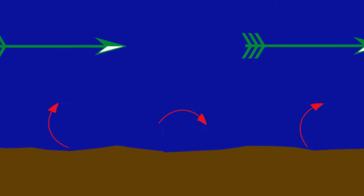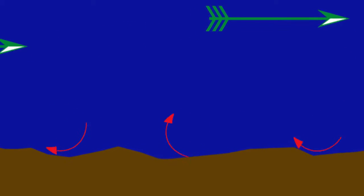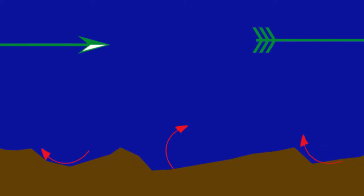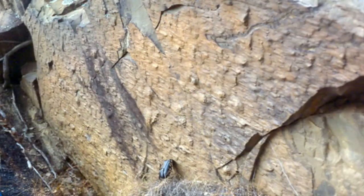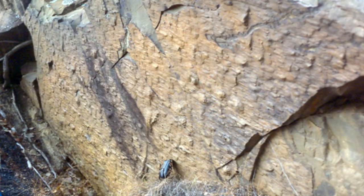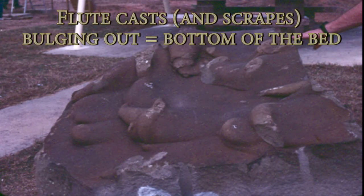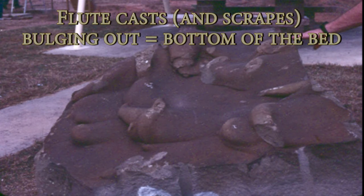The same is true of flute casts, which form from violent flow over fine-grained sediment. The fast water gouges into the muddy bottom making a deep pit mold on the topside that flares outward and shallower downstream, which we see in the cast form sticking out of the bottom of the overlying bed. All these features, called sole markings, give you both up direction and flow direction.